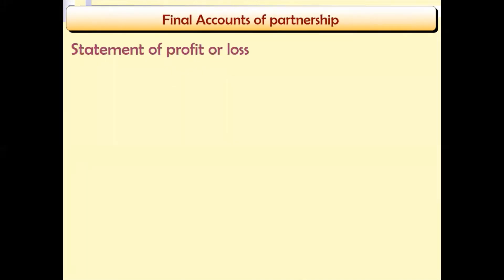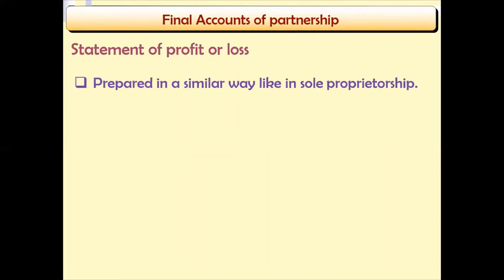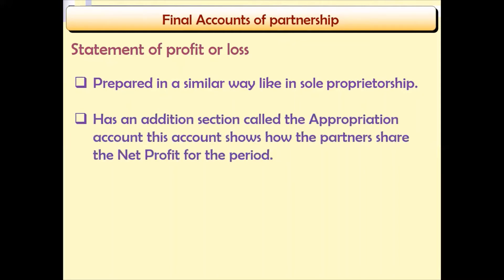In the final accounts, we shall look at two accounts, beginning with the Statement of Profit or Loss, which goes together with the appropriation account. The Statement of Profit or Loss is prepared in the same way as for a sole proprietorship business, but it has some differences — specifically, it has an additional section known as the appropriation account, which shows how the partners share the net profit for that particular period.